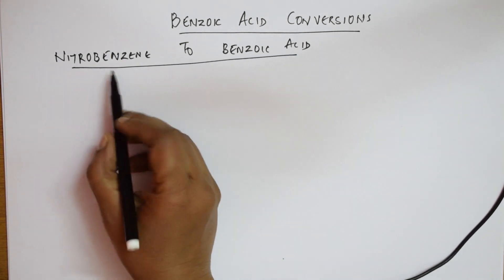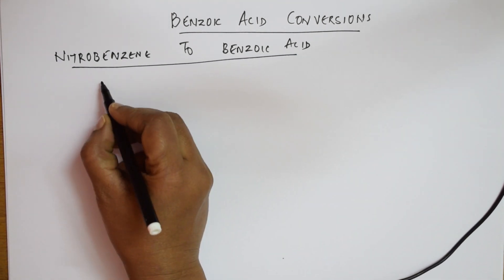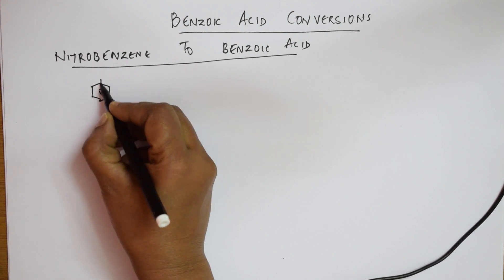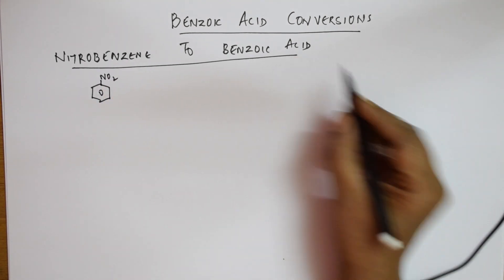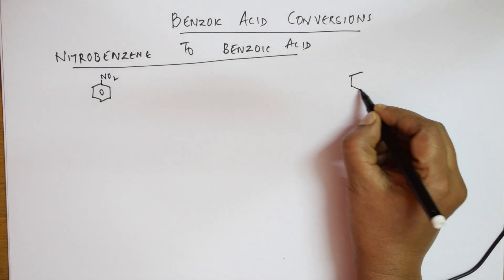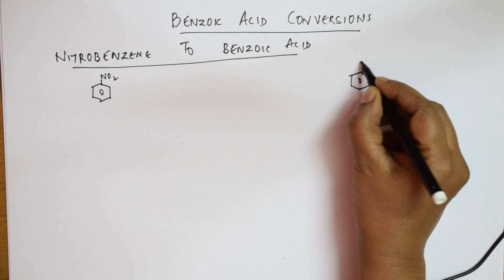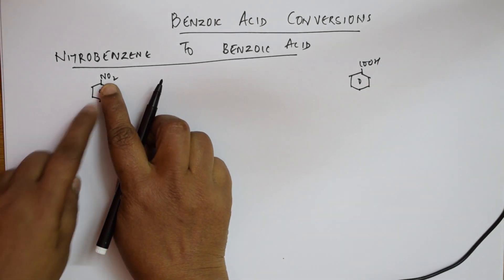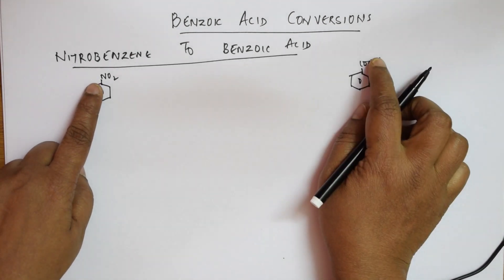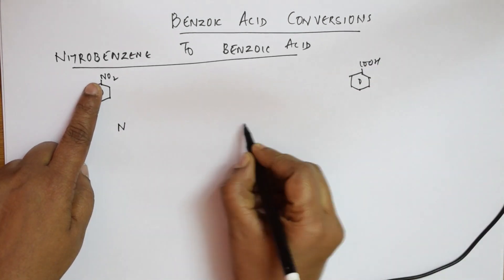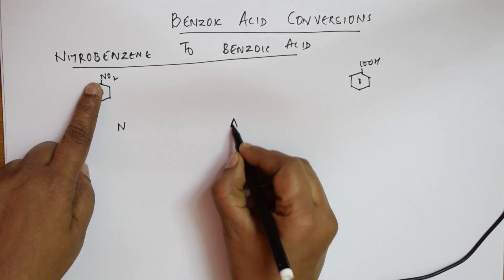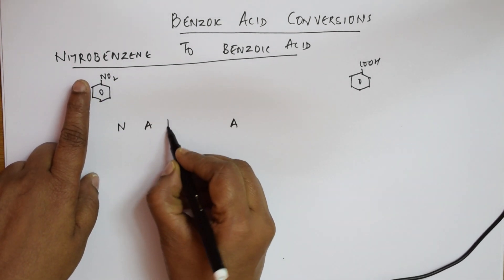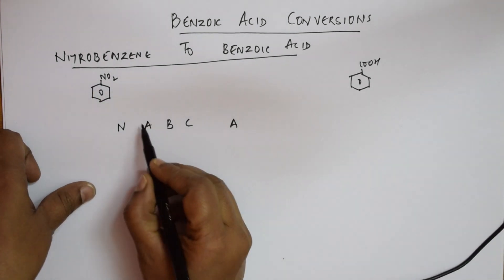Basically, nitrobenzene is benzene with NO2. What should I convert it to? I have to convert this into benzoic acid, that is benzene ring with COOH. When you have this combination, remember: nitro and acid are both here. So N and acid — both are here. In between, the steps which will be included are A, B, C.